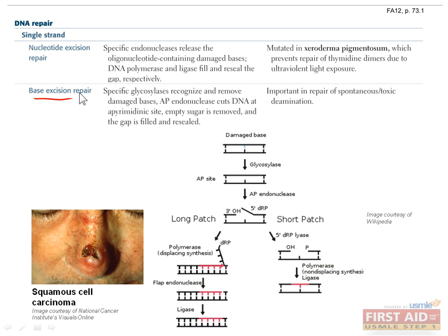Base excision repair is another repair mechanism which fixes bases that have been covalently modified, and it starts just the way it sounds. The damaged base is excised after being recognized by glycosylases. This results in an AP site, where AP stands for apurinic or apyrimidinic, which means the purine or the pyrimidine base has been removed. Next, an AP endonuclease cuts the DNA next to the AP site and either just that single nucleotide is removed or a string of up to 10 nucleotides is removed. Once again, DNA polymerase fills in the gap and ligase seals it shut.